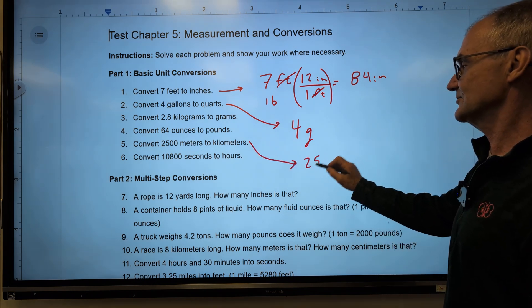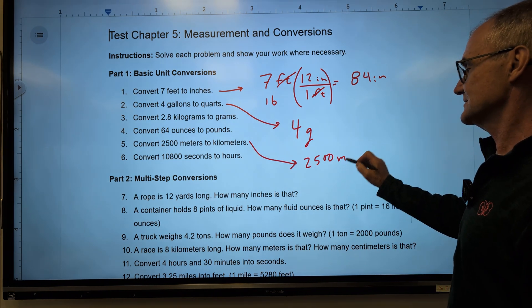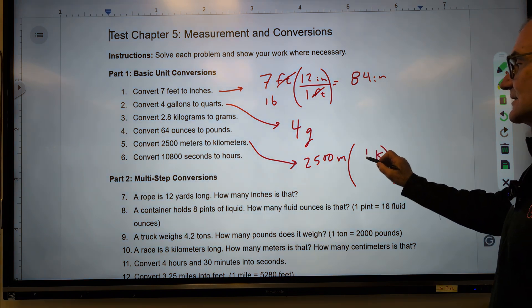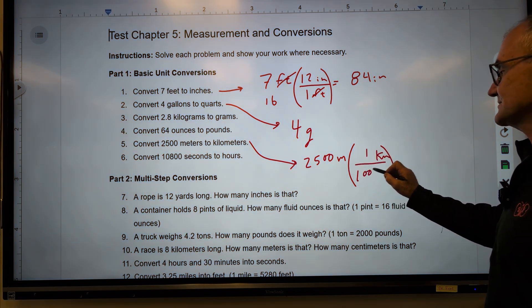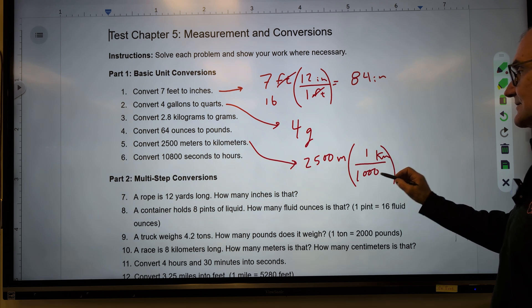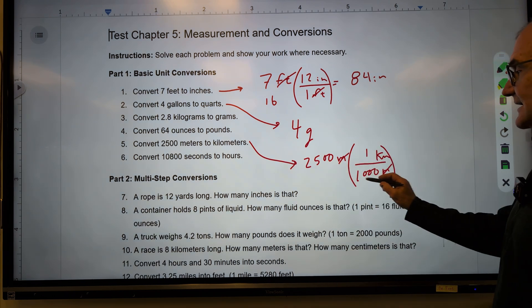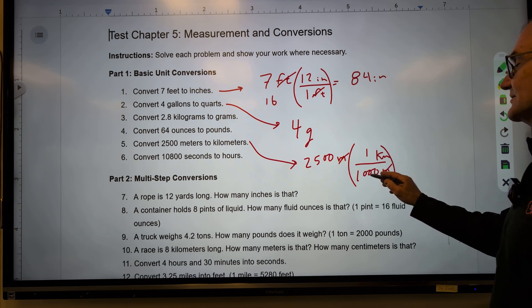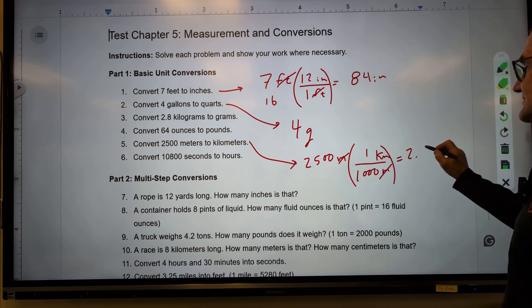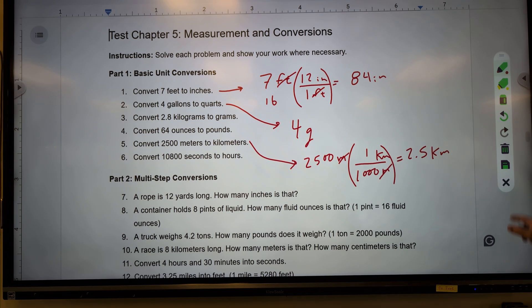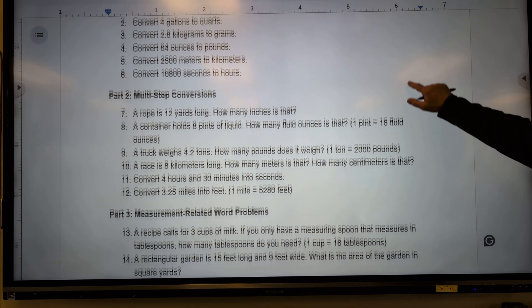Convert 2,500 meters to kilometers. So I know 1 kilometer is 1,000 meters. My meters will cancel. That's going to give me kilometers. I could just do 2,500 divided by 1,000 to get 2.5 kilometers. Okay, let's jump down to a few harder problems here. Multi-step conversions.